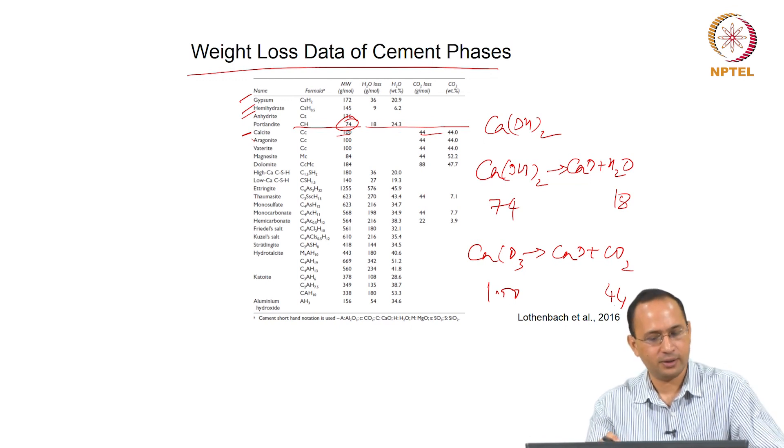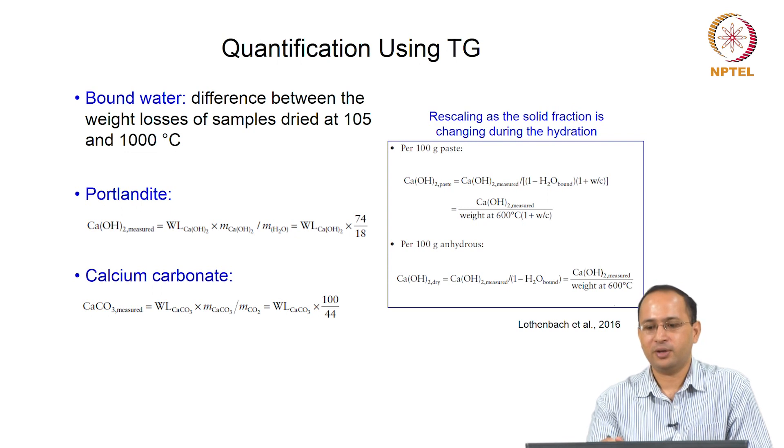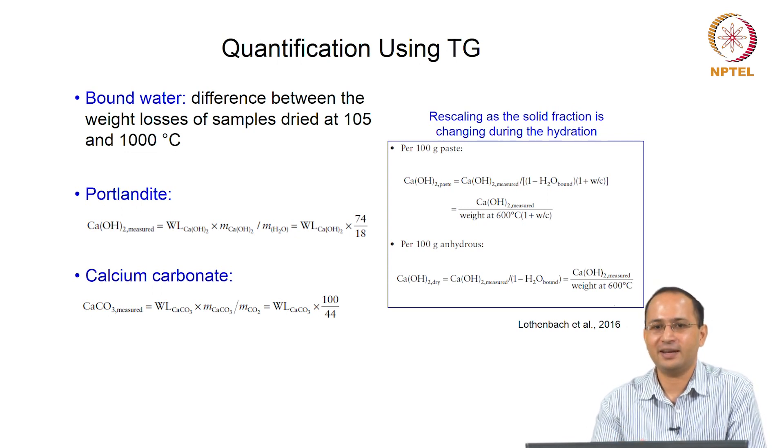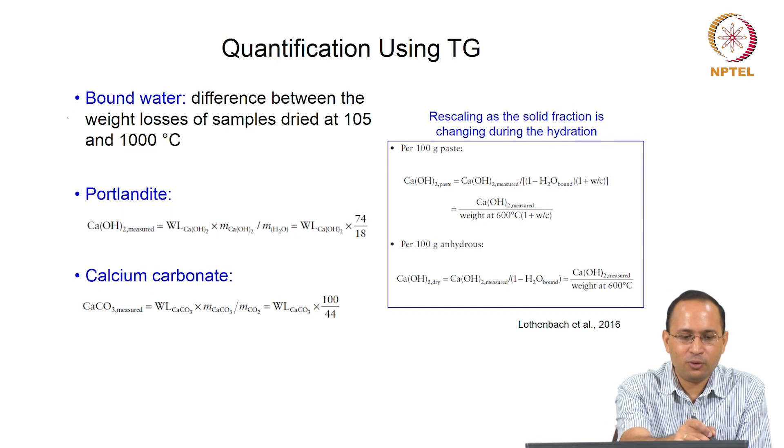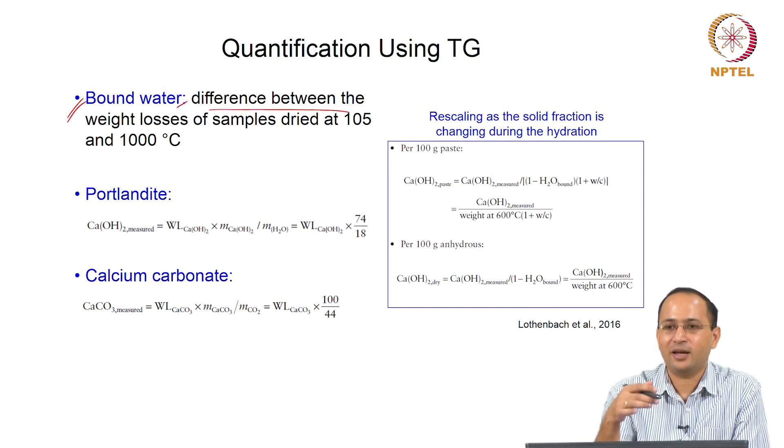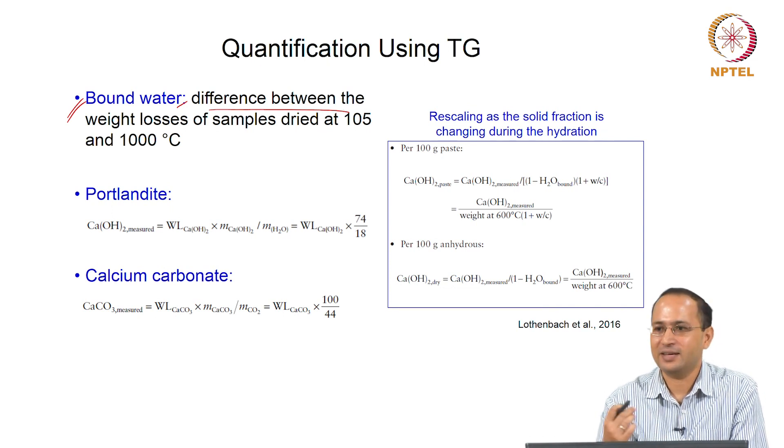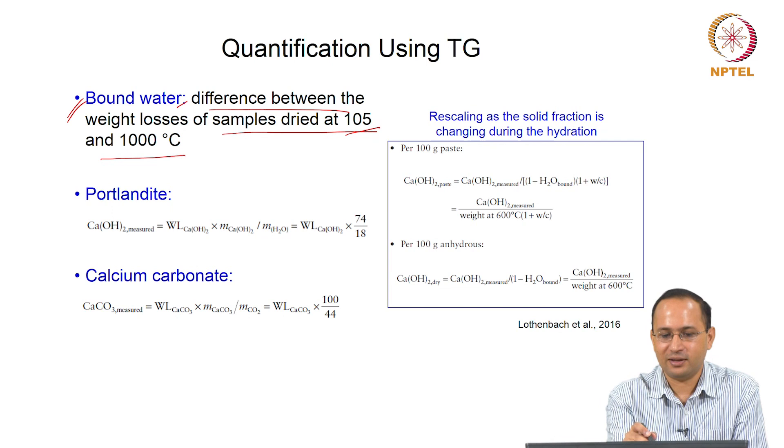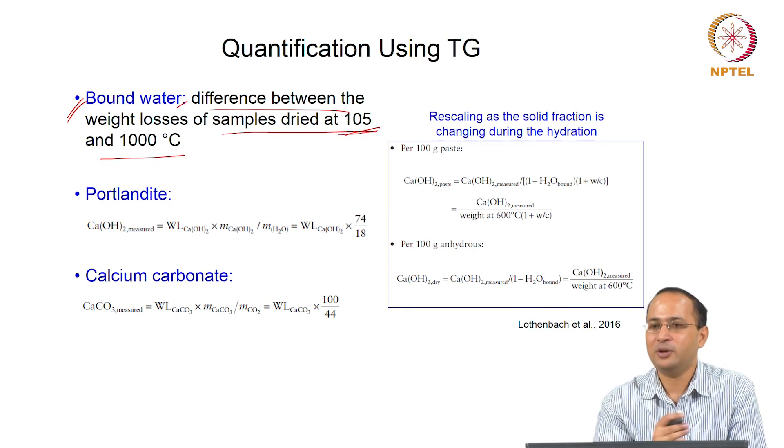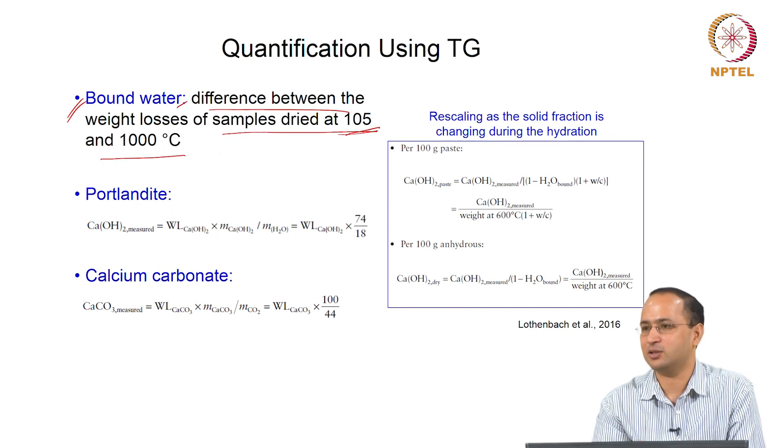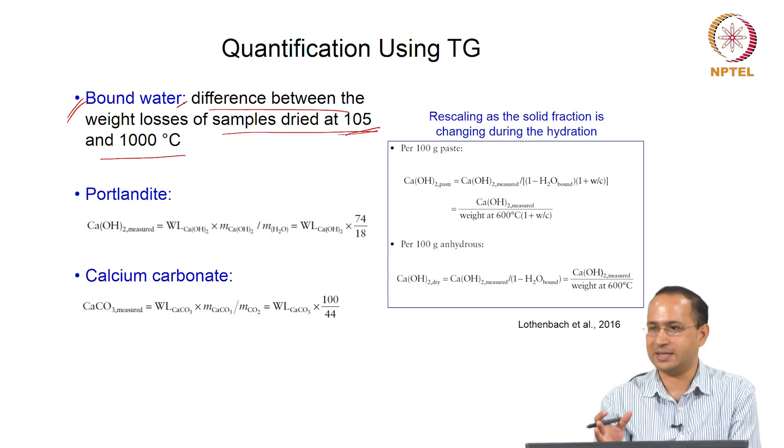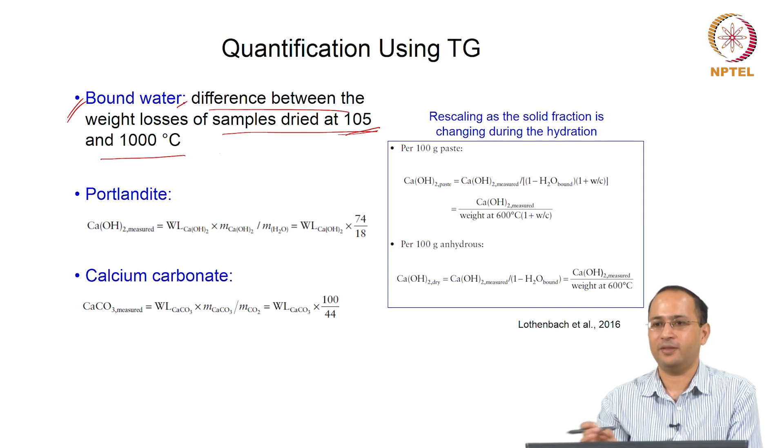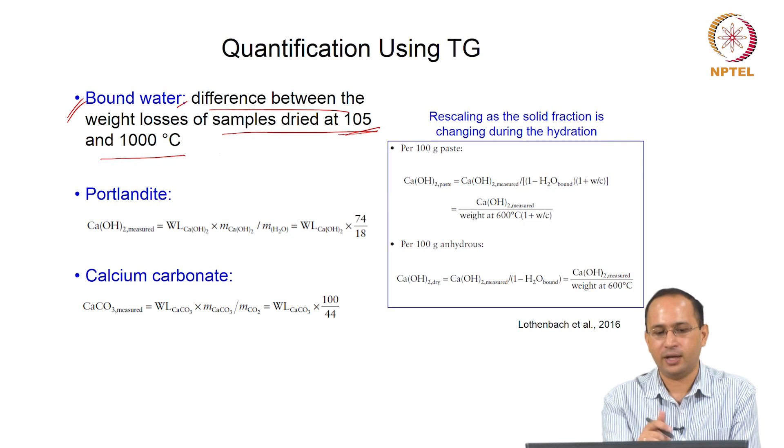How do we quantify? First of all, we can calculate the bound water. The bound water is not free water - as the name signifies, it is structurally bound. When you heat your sample, the weight difference is the difference in weight when you heat your sample from 105 degrees Celsius to 1000 degrees Celsius. Why 105? We want to make sure there is no free water. So you heat your sample to around 100 degrees Celsius to remove free water, then heat it up to 1000 degrees Celsius. You can use that to get information on bound water.